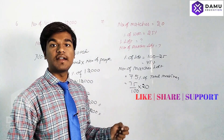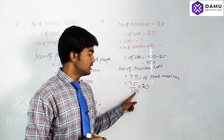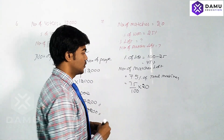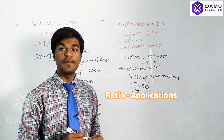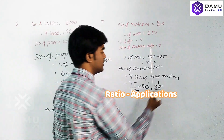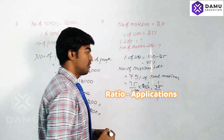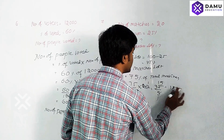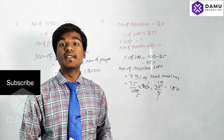Percent means per hundred, so we write it as division by 100. Calculating 75 by 100 into 20: simplifying, 20 divided by 100 gives a factor, and 75 into that gives 15. So the number of matches they lost is 15 matches.